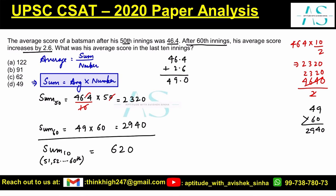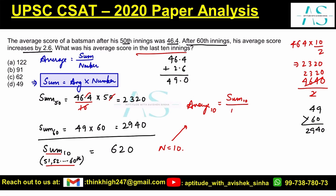The sum of runs in the last 10 innings is 620 and the number of innings is 10. So the average for the last 10 innings is 620 upon 10, which equals 62. The answer is 62, and option C is correct.